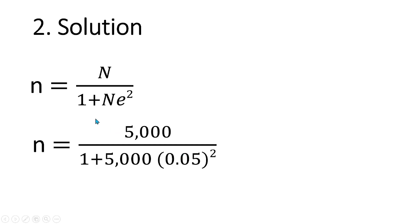So the solution - this is the formula first: n equals population divided by 1 (which is constant) plus the population times the square of the margin of error.